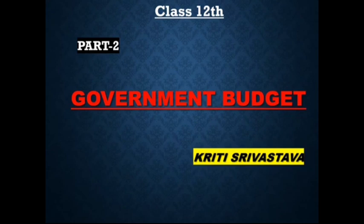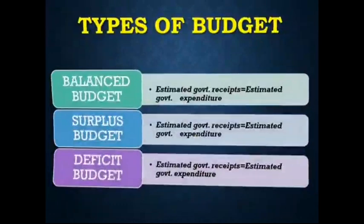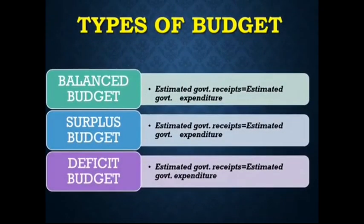The first topic of this video is types of budget. There are total three types of budget. The first one is balanced budget. When the estimated government receipt is equal to the estimated government expenditure, we denote it as a balanced budget.